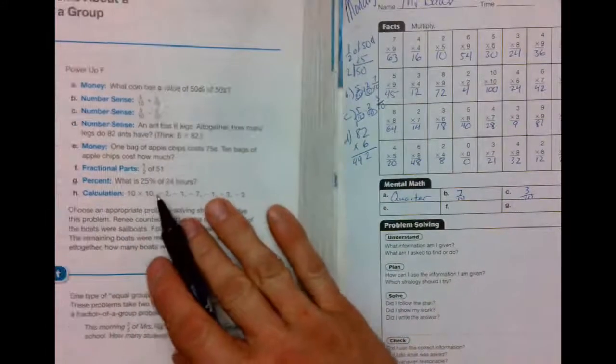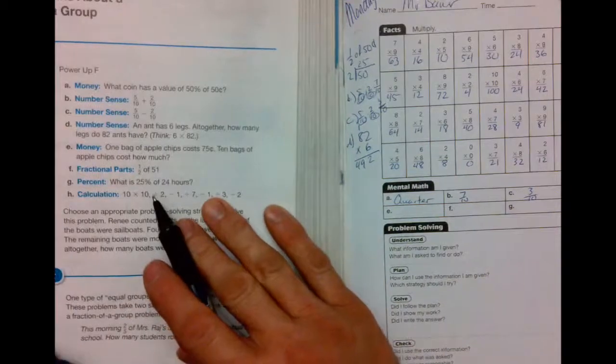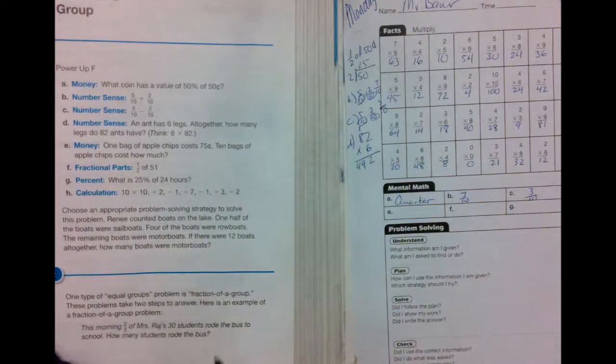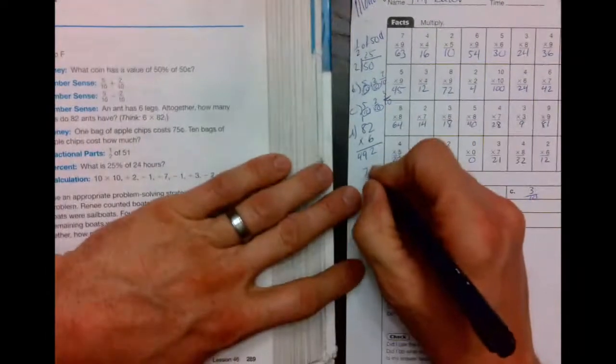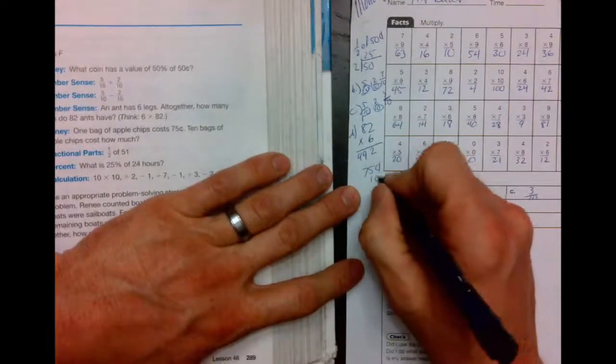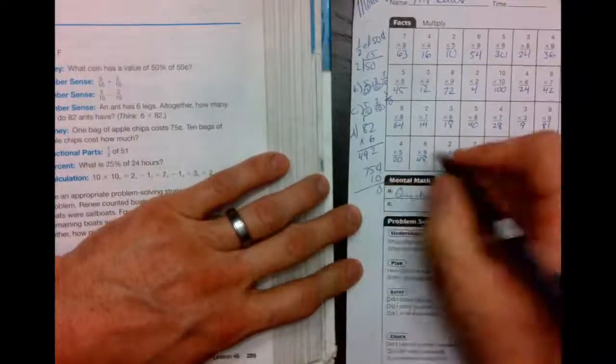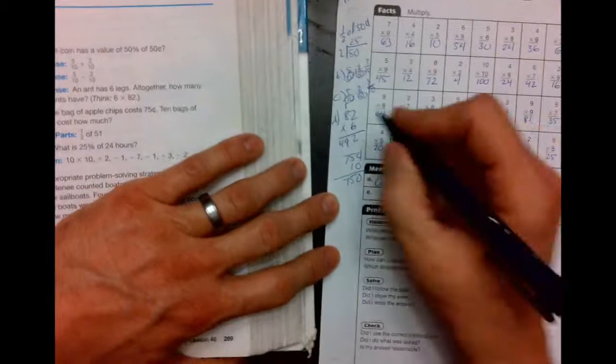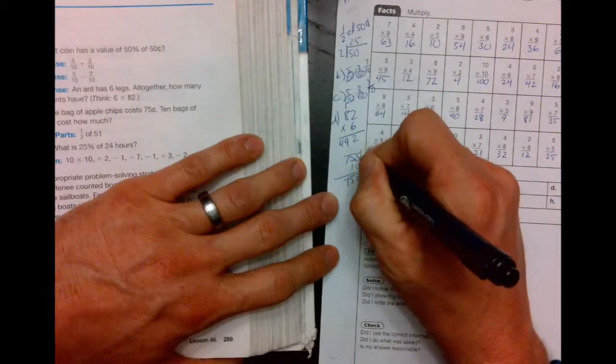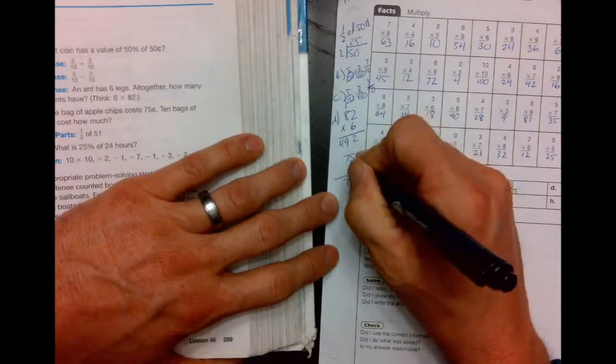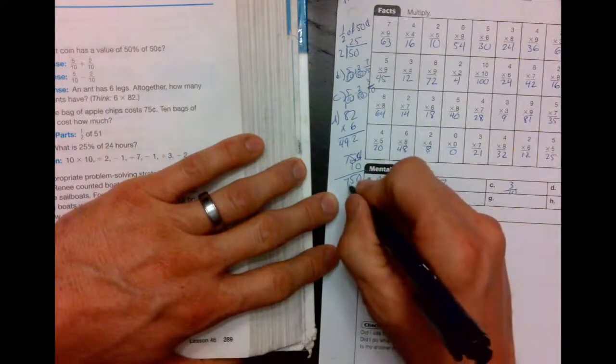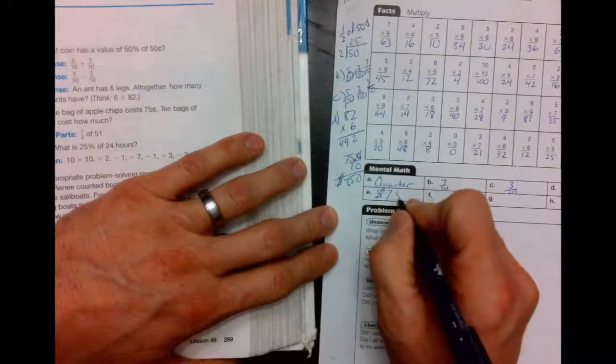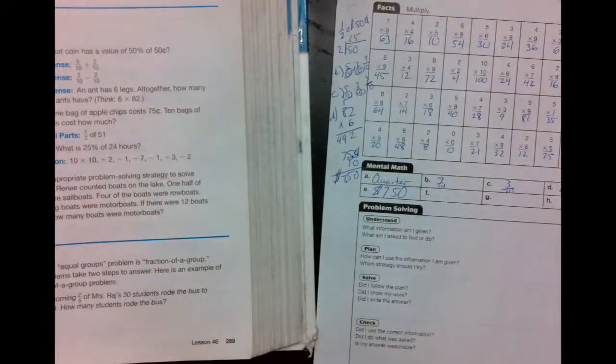E says, one bag of apple chips costs 75 cents. 10 bags of apple chips cost how much? So we got 75 cents times 10. Hang that zero out. Bring that zero down. 1 times 75 is 75. So all we did was move the decimal points over one time. So if the decimal point was here, we moved it over one time and add a zero. 1, 2 decimal point. $7.50 for 10 bags of apple chips.